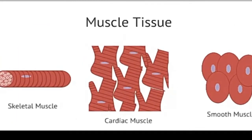Muscles are the next type of tissue and are found in three different varieties within the vertebrate body. Skeletal muscles are linear cylindrical cells which are responsible for the voluntary movement of the body. They are attached to the bones of the skeleton by tendons. When observed under the microscope, these muscles appear striated, or striped, because the contracting proteins within these muscles are very organized, exhibiting alternating light and dark bands.